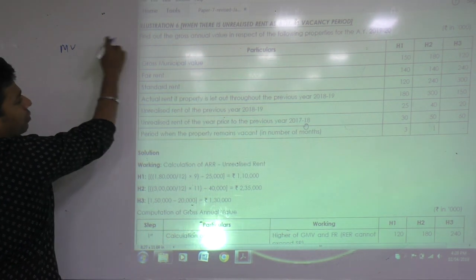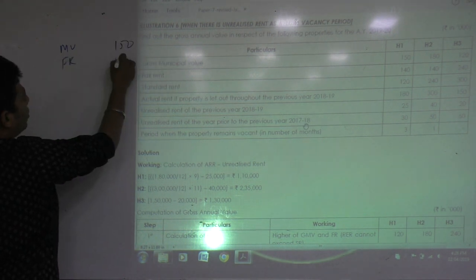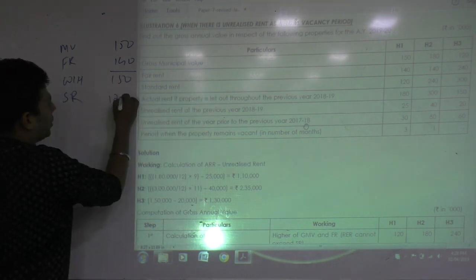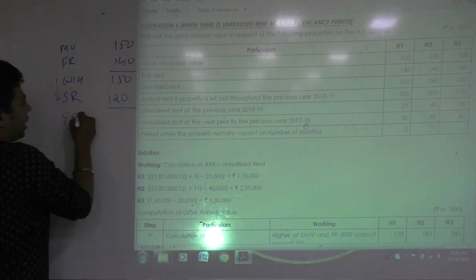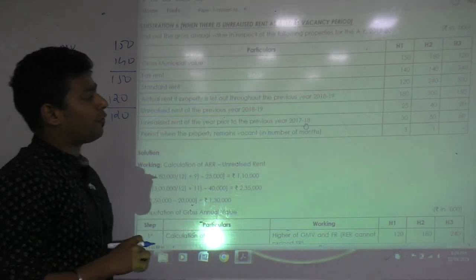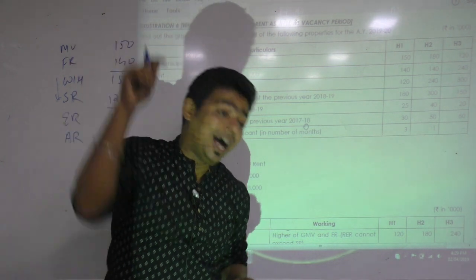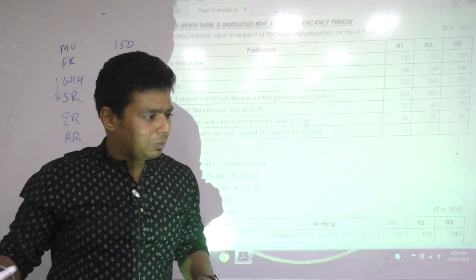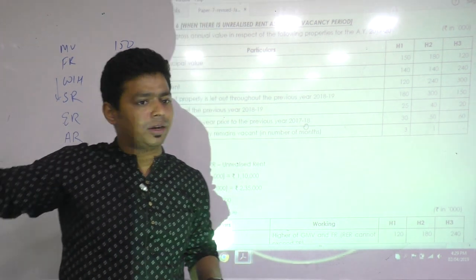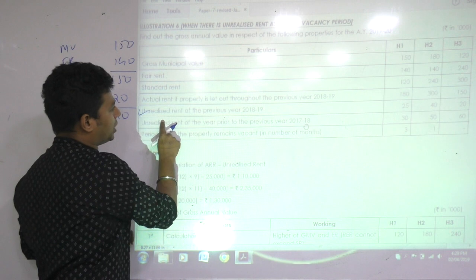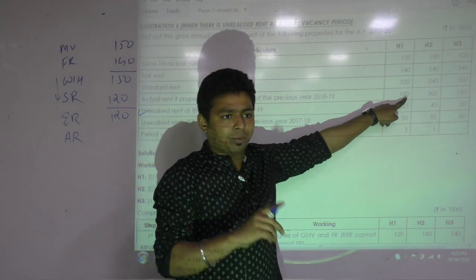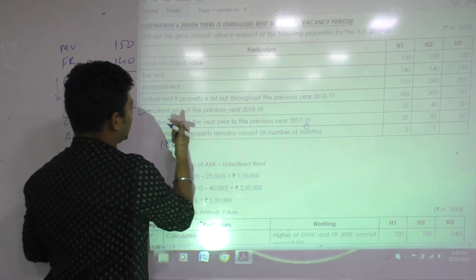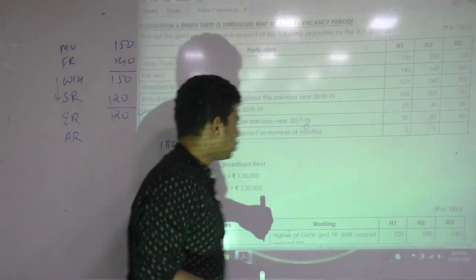Let us consider one property H1. Gross annual municipal value 150, fair rent 140. What do we write? Whichever is higher: 150. Then we have to compare standard rent. Standard rent of first property is 120, so whichever is lower. Expected rent: 120. Actual rent - what is the formula? Rent received plus receivable minus unrealized rent during the previous year.